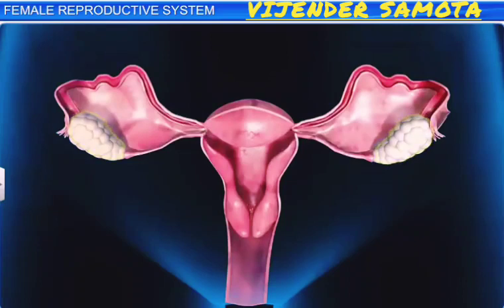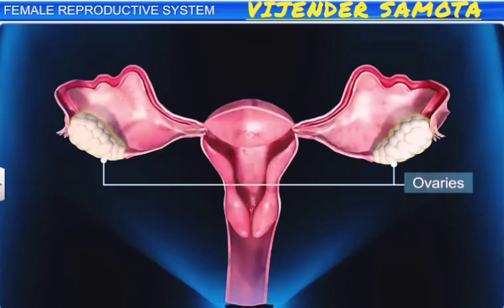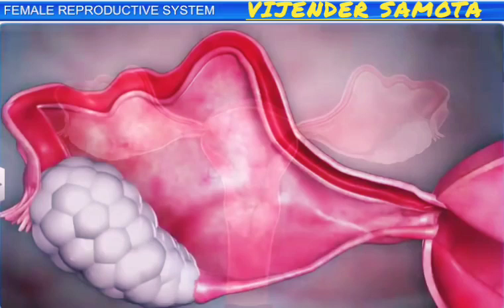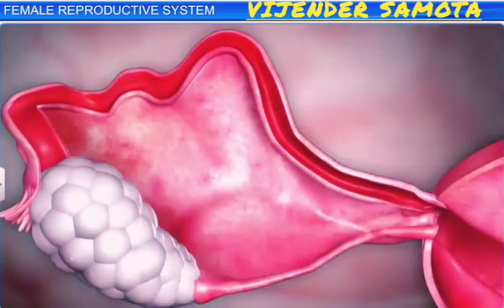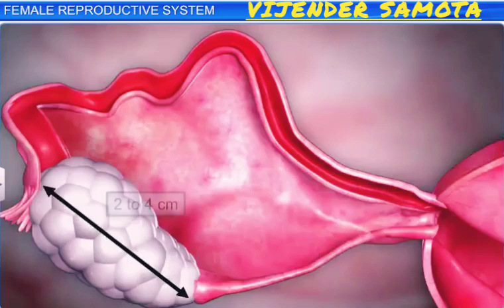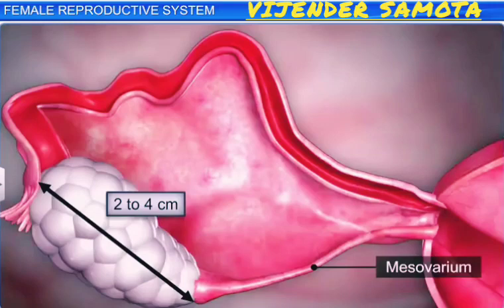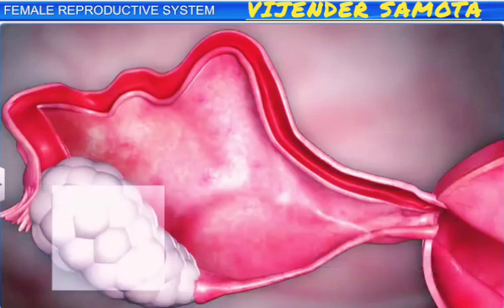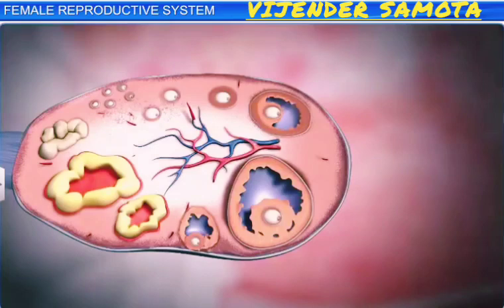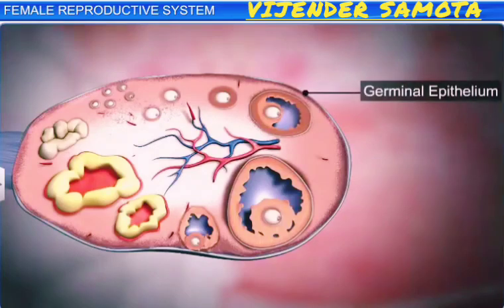The female reproductive system includes a pair of ovaries, located one on each side of the lower abdomen. They are the primary sex organs, as they produce the ovum, or the female gamete. Each ovary is about 2 to 4 centimeters in length. They are connected to the pelvic wall and the uterus by ligaments called mesovarium. Each ovary is covered by an outer thin layer called the germinal epithelium.